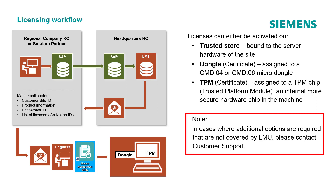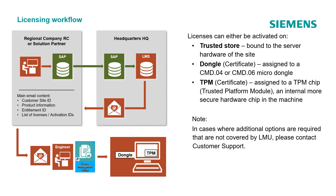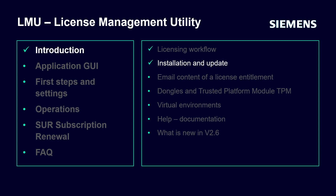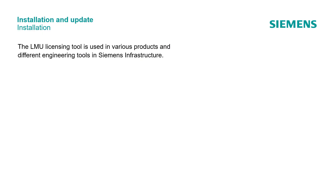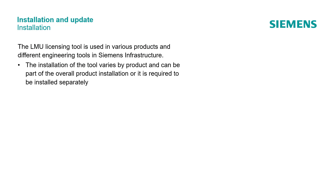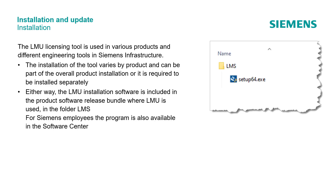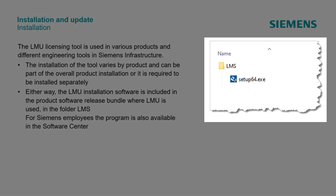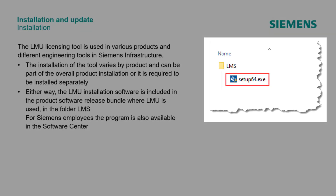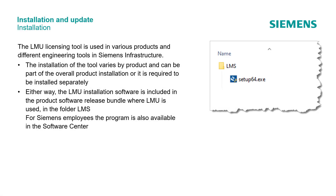Please note: in cases where additional options are required that are not covered by LMU, please contact customer support. The LMU licensing tool is used in various products and different engineering tools in the Siemens infrastructure. The installation varies by product and can be part of the overall product installation or installed separately. Either way, the LMU installation software is included in the product software release package in the folder LMS, which contains the setup file to execute the installation process. For Siemens employees, the program is also available in the Software Center.